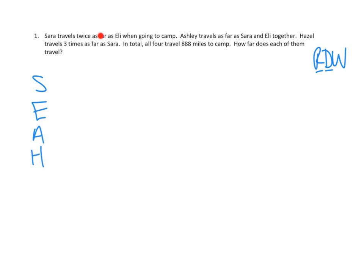None of them — we're not given any numbers about how far each of them travel. We're just given this overall number. So let's start doing a tape diagram and see if we can make sense of it that way. Sarah travels twice as far as Eli. So if I had Eli traveling exactly this far, then Sarah would need to be twice as far as that. So I'm going to just do two of those units. Sarah travels twice as far as Eli.